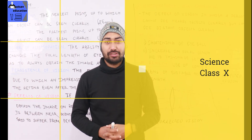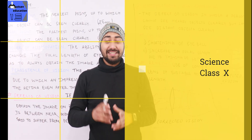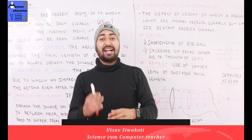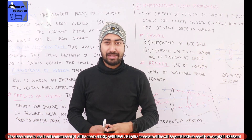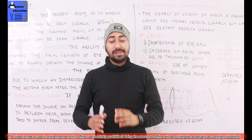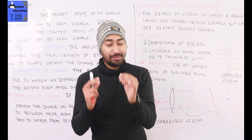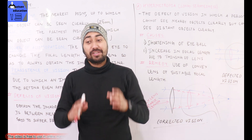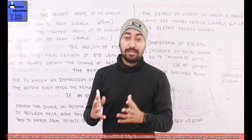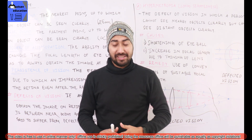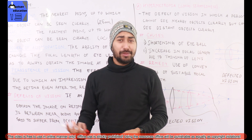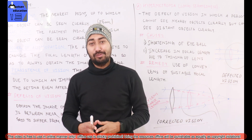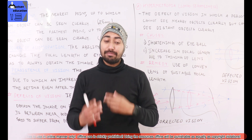Hello everyone. Today I am in the last part of the Light chapter. I am going to study the defects of vision and the accommodation of vision. This is a very important topic in Class 10. It is very important to understand the diagram.